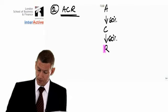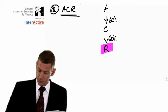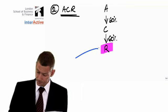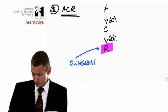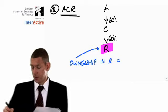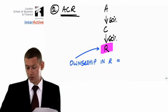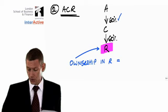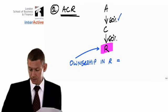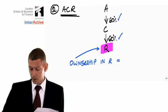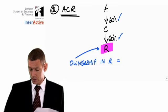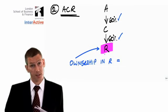What I'm going to do is highlight R and ask, what's the ownership in R? Well, if A owns 60% of C, and C owns 60% of R, then A owns 60% of 60% of R. It's 60% of 60%, which equals 36%. It's not too difficult, is it?